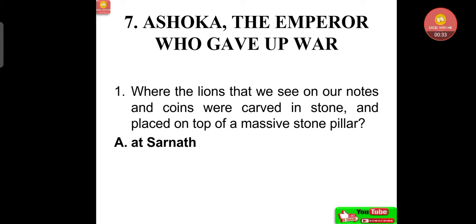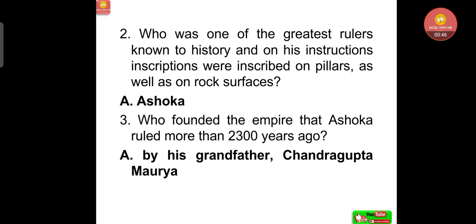First question: where were the lines that we see on our notes and coins carved in stone and placed on top of a massive stone pillar? That is at Sarnath. Who was one of the greatest rulers known to history, on whose instructions inscriptions were inscribed on pillars as well as on rock surfaces? That was the great Ashoka. Who founded the empire that Ashoka ruled more than 2300 years ago? That was his grandfather, Chandragupta Maurya.